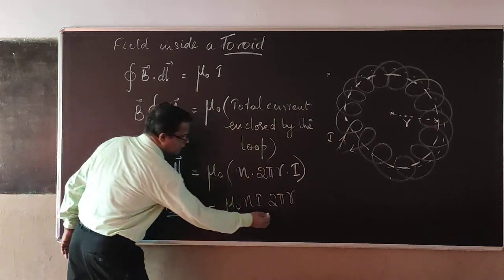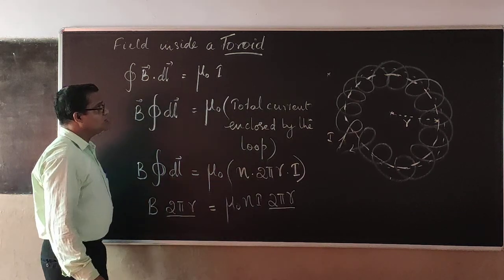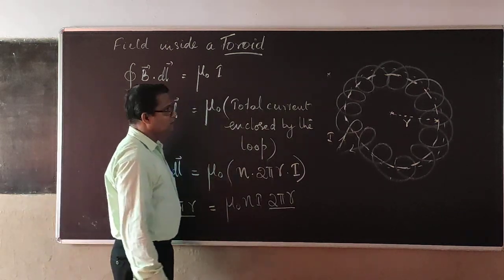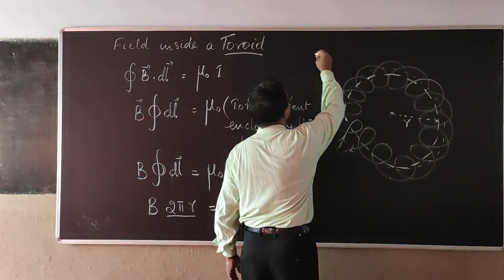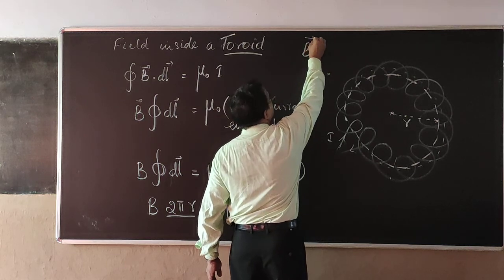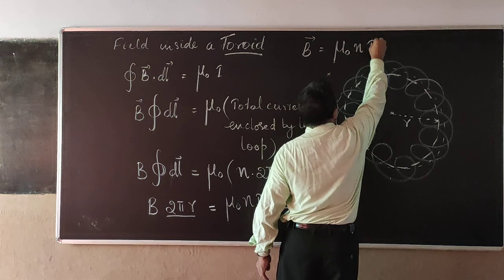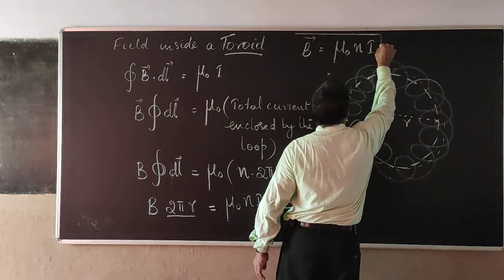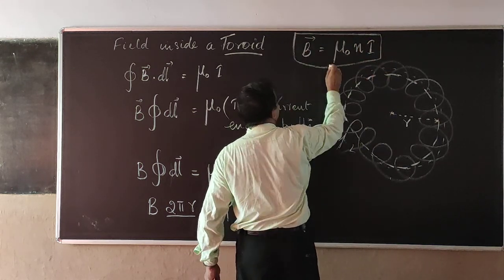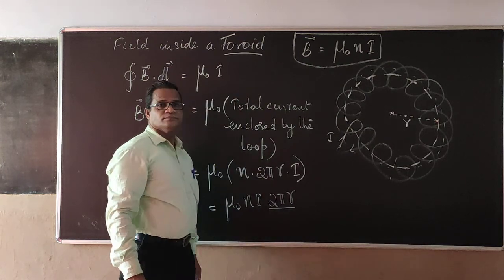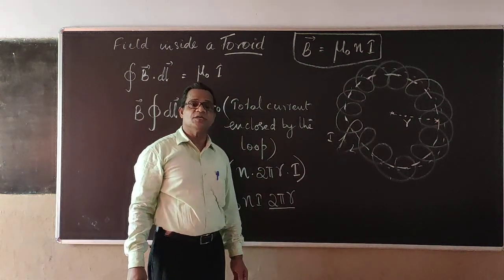Therefore, 2πR and this 2πR will cancel and we get the magnetic field inside: B will be equal to μ₀nI.